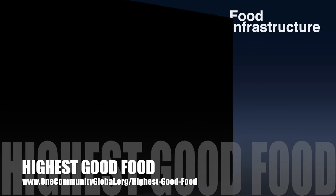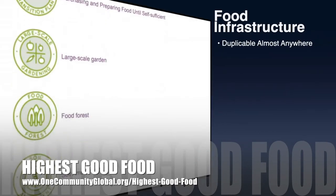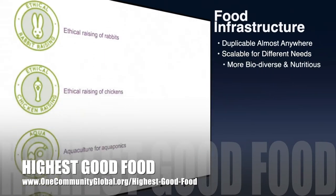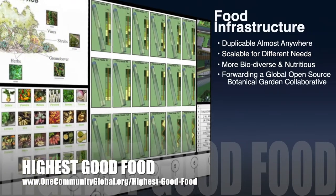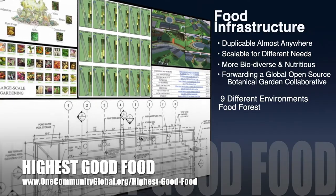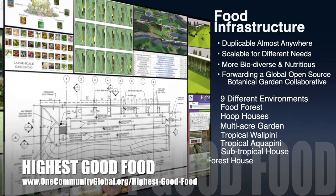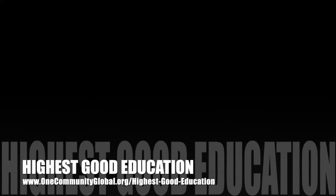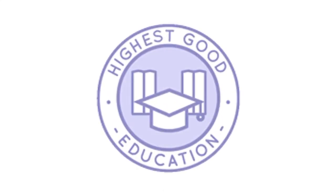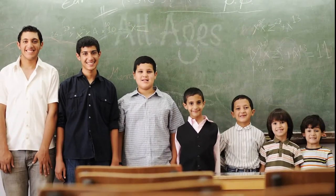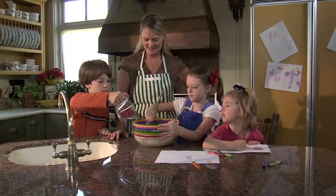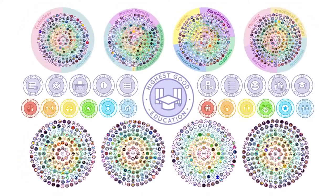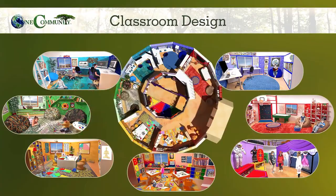One Community's approach to highest good food is duplicable almost anywhere, scalable for different needs, more biodiverse and nutritious, part of forwarding a global open source botanical garden collaborative, and includes nine different free shared and duplicable growing environments. The next component is highest good education, which is complete and pretty much ready to launch once on the property. It is designed for all age groups, adaptable to any schooling environment, inspiring and fun for all participants, and includes national standards, all subjects, lesson plans, teaching strategies, learning strategies and tools, classroom design, and more.